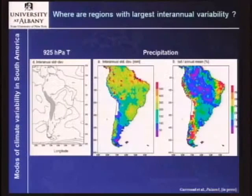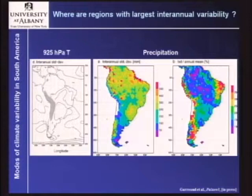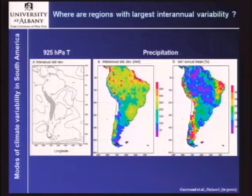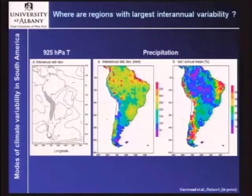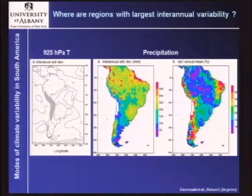If we want to find places in South America where we can reconstruct modes of climate variability at high resolution, we may want to go to places where we actually have large interannual variability. This figure shows the interannual variability expressed as standard deviation for both temperature — the gray figure on the left — and precipitation on the right. Temperature variability on interannual timescales is largest in the subtropics and is more than twice as large in amplitude as in the tropics. The largest absolute precipitation variability is found in the wet tropical regions and along the west coast of South America in Chile.